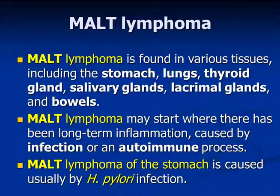What is MALT lymphoma? It is found in various tissues including the stomach, lungs, thyroid gland, salivary glands, lacrimal glands, and bowels. MALT lymphoma may start where there has been long-term inflammation caused by infection or an autoimmune process. MALT lymphoma of the stomach is caused usually by H. pylori infection.